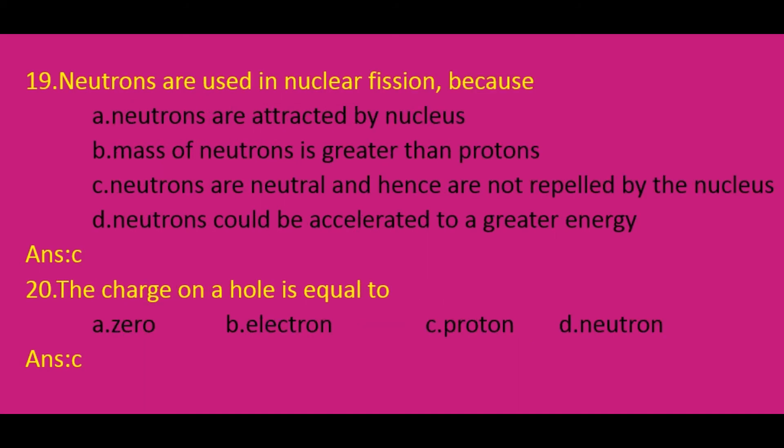Neutrons are used in nuclear fission because in nuclear fission heavy atoms are bombarded with neutrons. Why do we use neutrons? Because neutrons are neutral and hence they are not repelled by the nucleus. So the correct option is C.